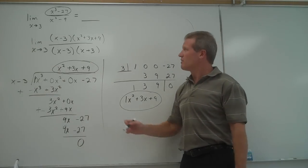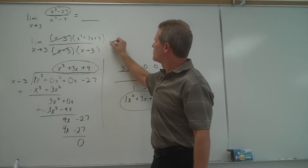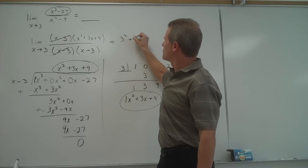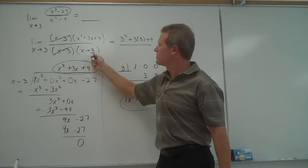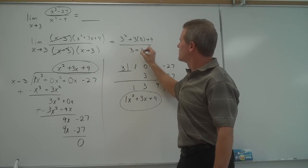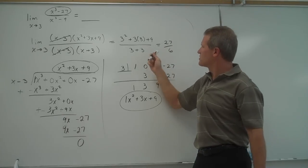Once I get that factored out, I can cancel the x minus 3s. Now I can plug the 3 in for x. So I get 3 squared plus 3 times 3 plus 9 over 3 plus 3. This comes up to 9 plus 9 plus 9, which is 27. 3 plus 3 is 6.